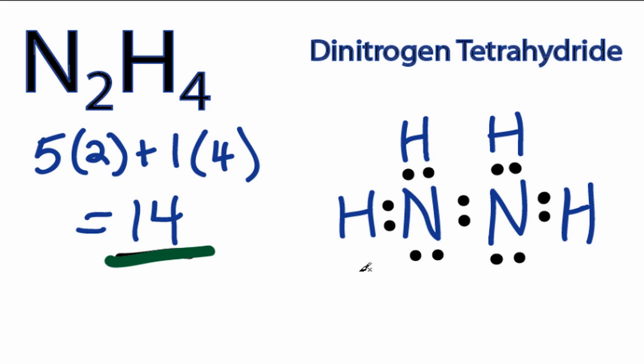So we've used all 14 valence electrons. We've satisfied the outer shells. They're all full for each of the elements. And that's it. That's the N2H4 Lewis Structure. This is Dr. B, and thanks for watchin'.